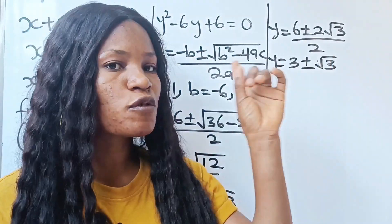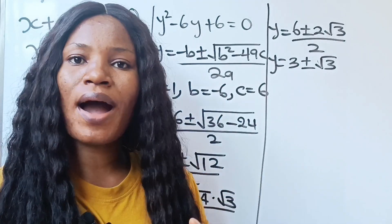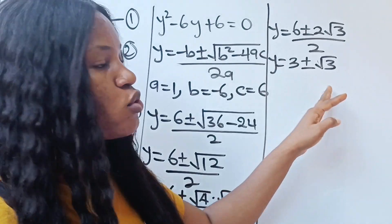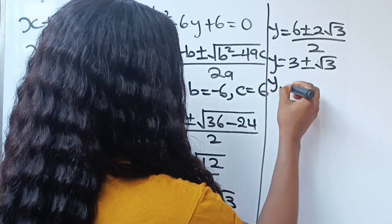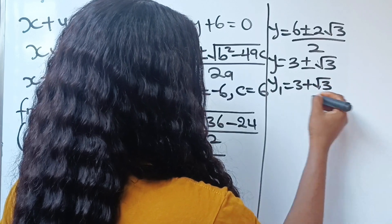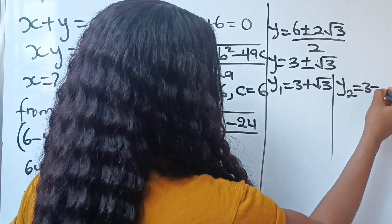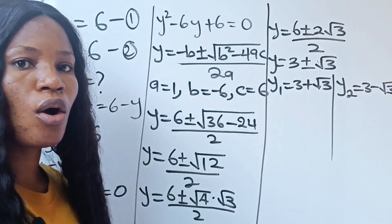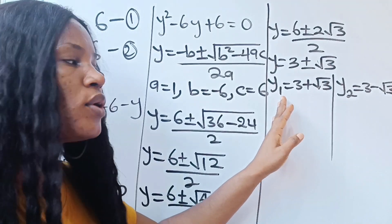This means we have two values of y. Recall that we are asked to find both y and x. Our y1 is 3 plus root 3, and our y2 is 3 minus root 3. Now let's go ahead and solve for x1.